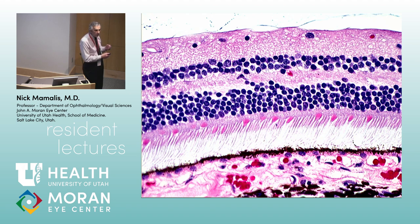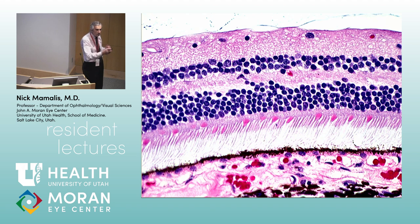The axon links up to a bipolar cell. The bipolar cell body is in the inner nuclear layer. Then the axon goes out and links up to a ganglion cell. The ganglion cell body is right there in the ganglion cell layer.